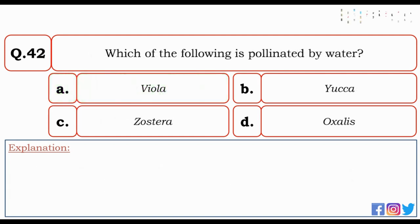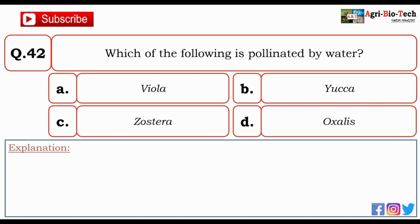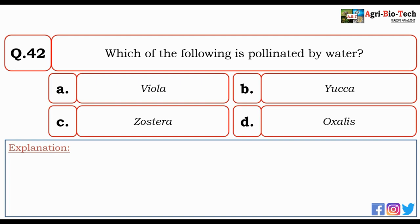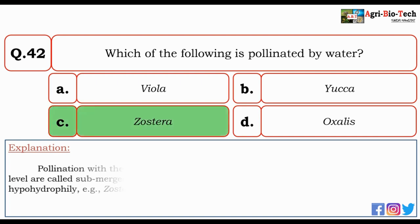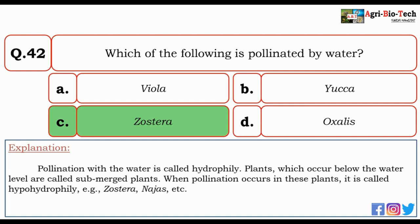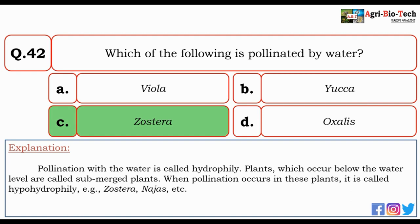Next question: which of the following is pollinated by water? Options: Viola, Yucca, Zostera, or Oxalis. The correct answer is C — Zostera. Pollination with water is called hydrophily. Plants which occur below the water level are called submerged plants. When pollination occurs in these plants, it is called hypohydrophily.